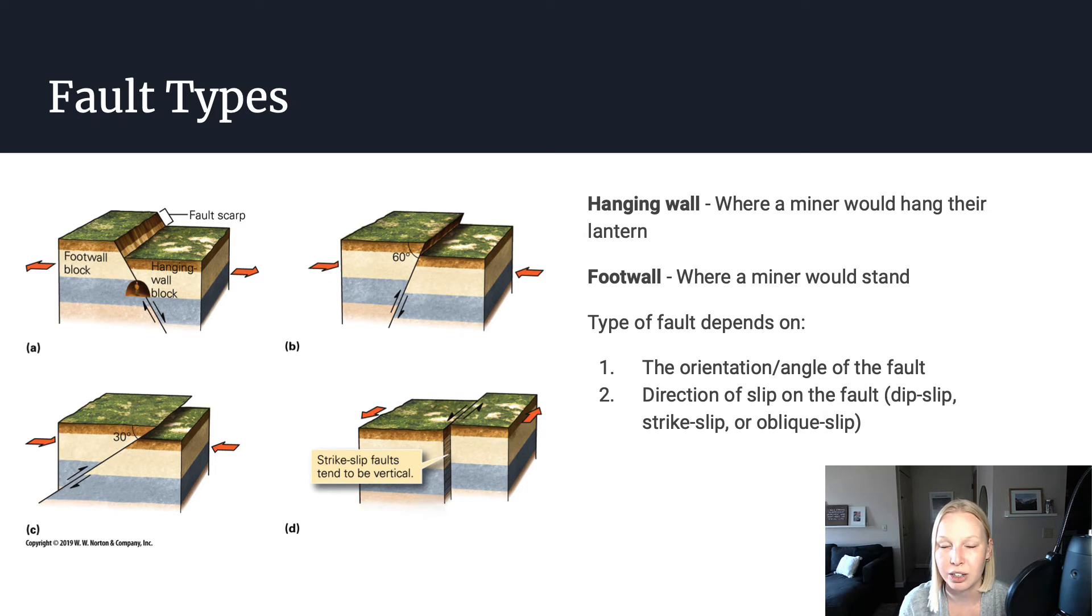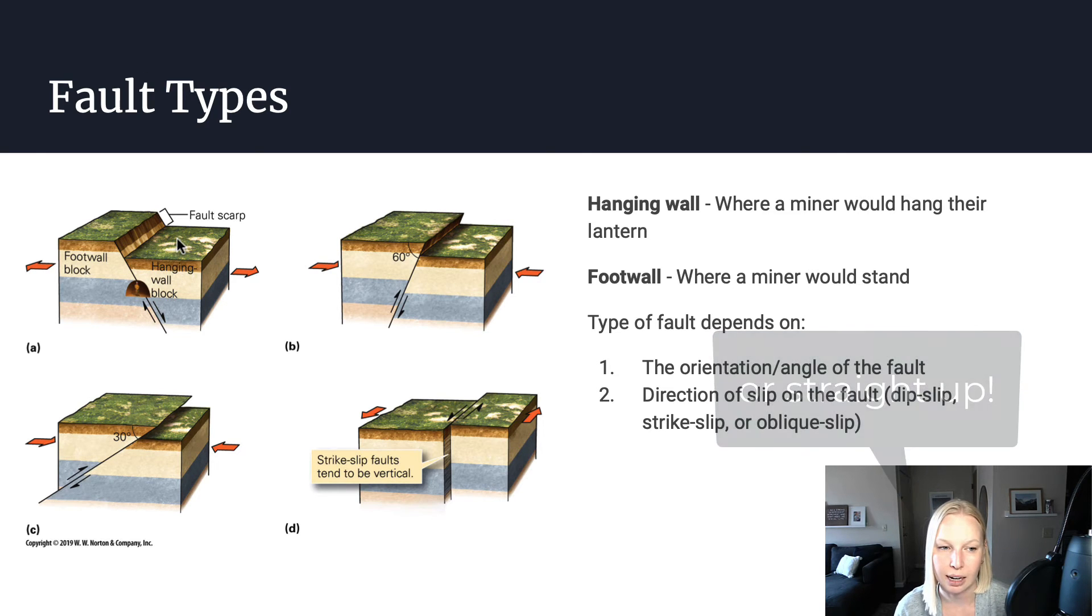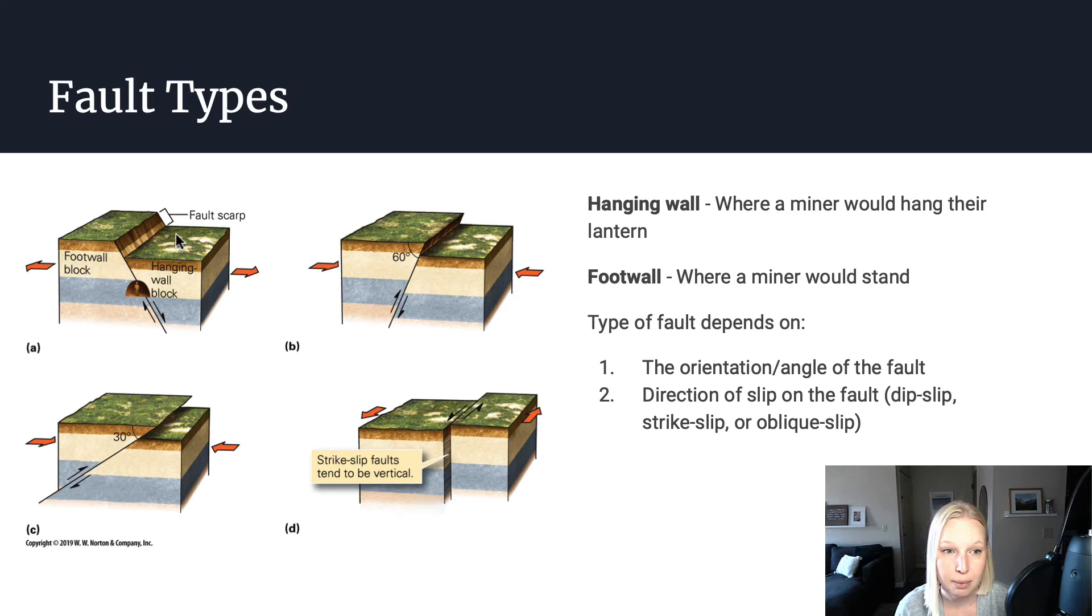Another important characteristic when you're trying to determine what type of fault it is, is the direction of slip on the fault. Whether the slip is dip slip, strike slip, or what we call oblique slip. A dip slip fault is a fault in which the hanging block is moving straight down the fault plane, whereas a strike slip fault is one that is moving side to side.